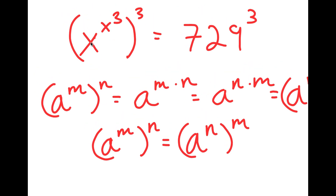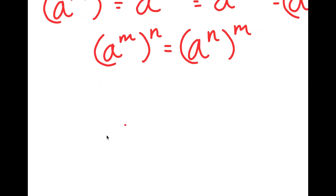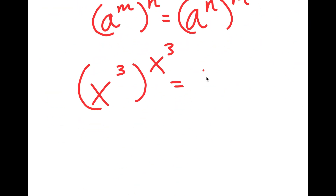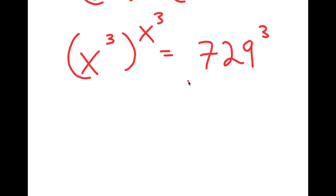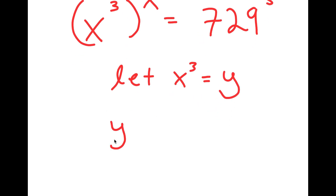So now from here, I have x to the power of x to the power of 3, to the power of 3. I can think of x to the power of 3 as m and 3 as n. So if I switch the places of these two, I get x to the power of 3 to the power of x to the power of 3, and this is equal to 729 to the power of 3. From here, I'm going to let x to the power of 3 equal to the variable y. So I get y to the power of y is equal to 729 to the power of 3.